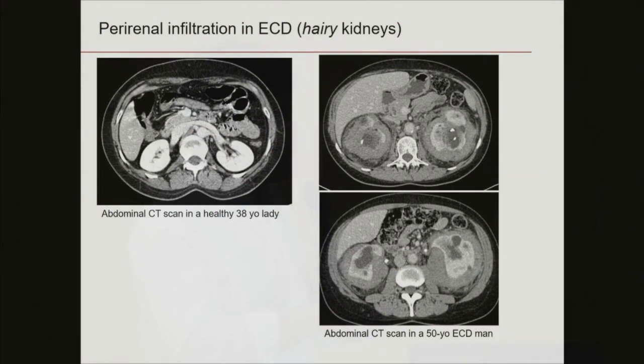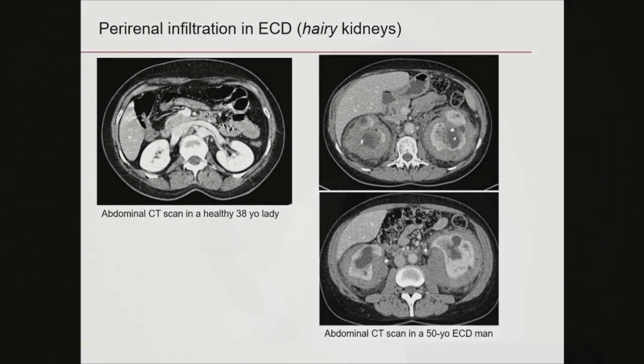This is an abdominal CT scan in a healthy person — you can see the kidneys are free, there's nothing around. Whereas in patients with Erdheim-Chester Disease, this is a very typical manifestation. We still don't know why, but there's probably something in the renal capsule that attracts the histiocytes. Generally, the area infiltrated is around the kidney, and because this infiltration has an irregular pattern, this is what is referred to as the hairy kidney aspect. This infiltration does cause harm — it does compress.